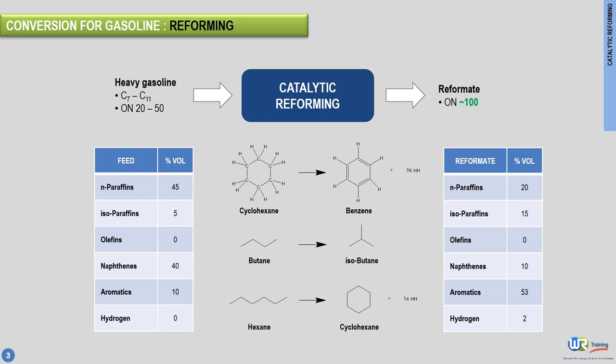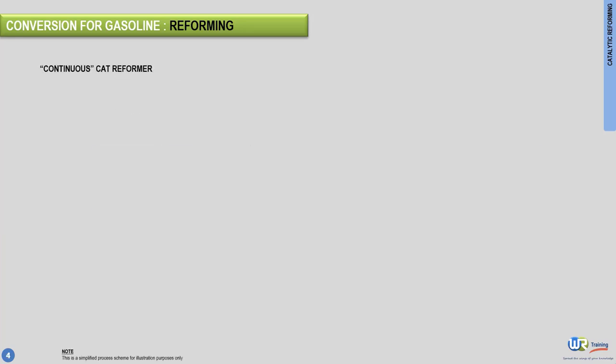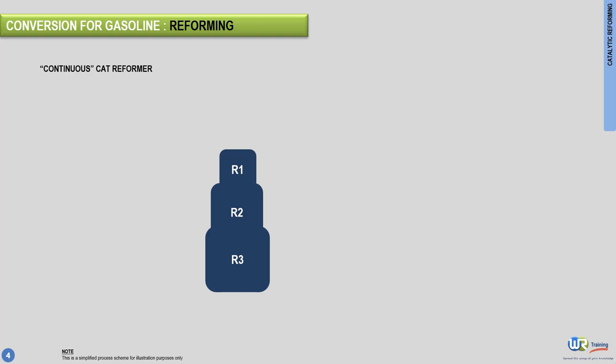These two process technologies are the fixed bed catalytic reforming and the continuous bed catalytic reforming. In this video, we discuss the continuous process only. In the continuous bed catalytic reforming, three reactors are stacked on top of each other. The platinum catalyst circulates through the three reactors by gravity. It drops from top to bottom between two concentric pipes made of a fine mesh.